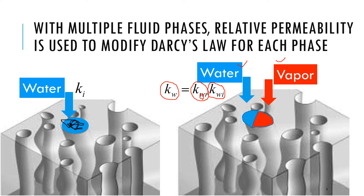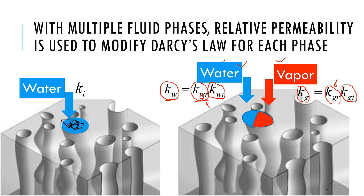The important thing is we can adjust for the amount of water flow — if there is more gas, there is less water, and that shows up through the relative permeability. Likewise, for vapour, the gas permeability is the intrinsic permeability multiplied by the relative permeability of the gas. There is a complementary relationship between gas-related and water-related permeability. When we have multiple phases like water or vapour, we know how to handle it because permeability gets adjusted by relative permeability.